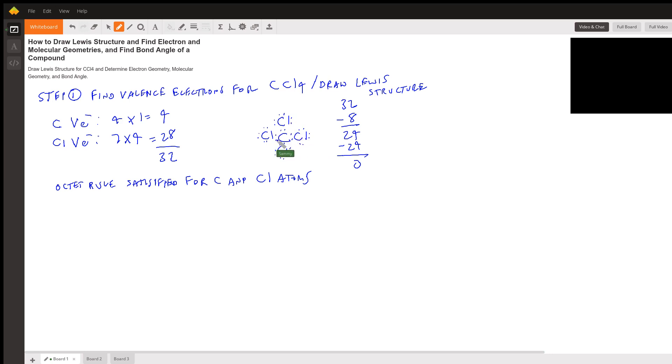We need to go ahead and form single bonds between the carbon and each chlorine. So we'll put two single electrons between each carbon and chlorine bond. So we'll put two electrons here, two here, two here, two here to form the single bonds.